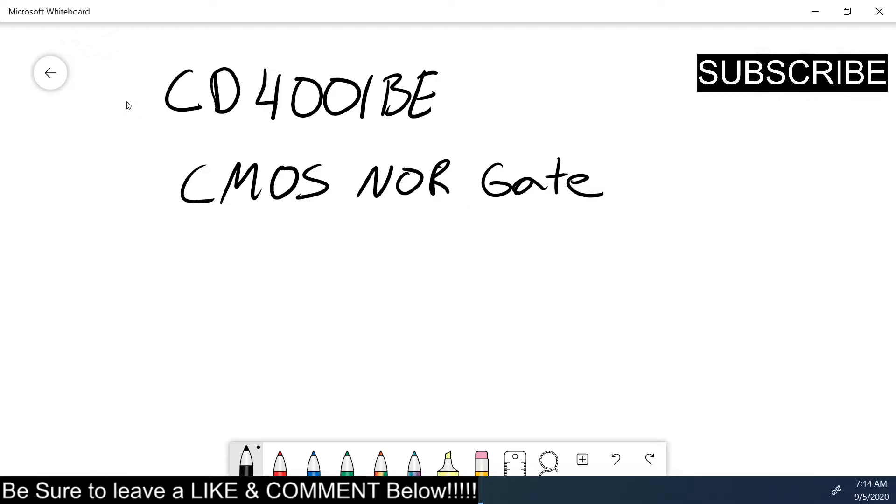If you remember, if you watch my logic series, a NOR gate truth table is: we have A, B, and our output. If A is 1 and B is 0, this is going to be 0 because it's the opposite. This is 1, and if A is 1 and B is 1, this is going to be 0. But if it's 0, 0, this will be 1.